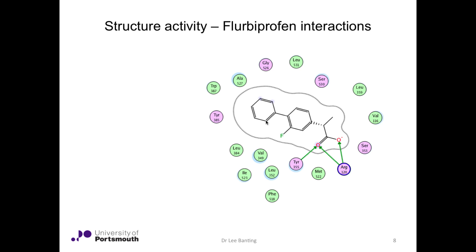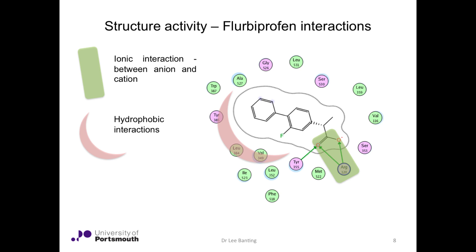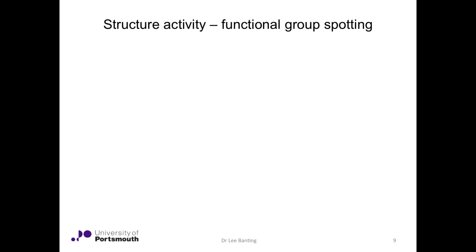Looking at the interaction map for flurbiprofen and the residues within that enzyme: there is a nearby serine residue, and a hydrophobic arc again involving tyrosine, leucine, valine, and alanine. All around are hydrophobic residues which comfortably recognize the much more hydrophobic grouping on flurbiprofen. Anchoring flurbiprofen down is an interaction with the arginine residue — as previously seen in the aspirin situation — plus an additional hydrogen bonding interaction with tyrosine to the carboxylate of flurbiprofen, making flurbiprofen a very tight binding inhibitor.